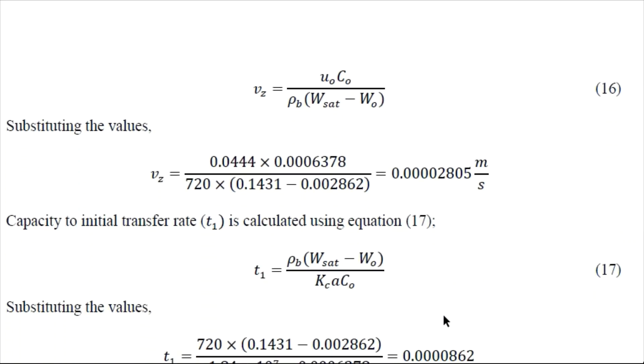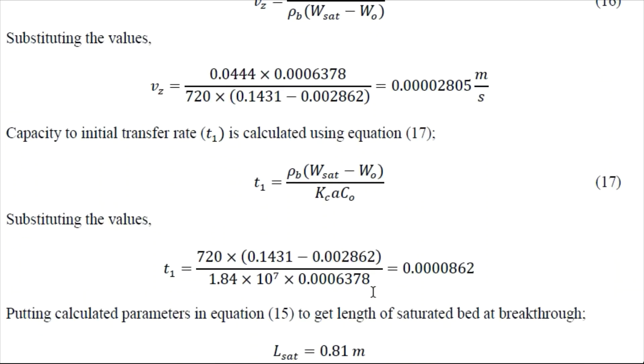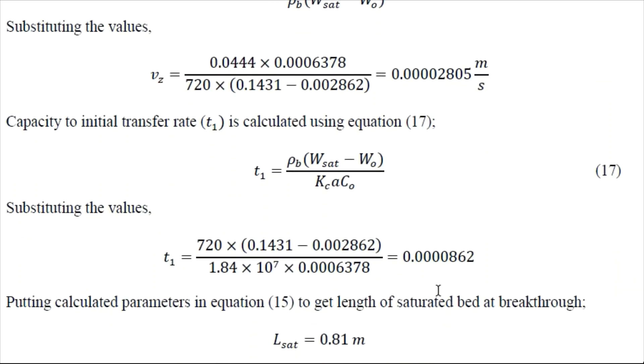Then we can find the initial mass transfer rate that is given by this equation. So we again have all of these parameters. After substituting these values we obtain the T1 value as 0.000862.